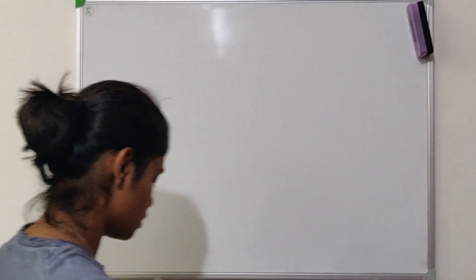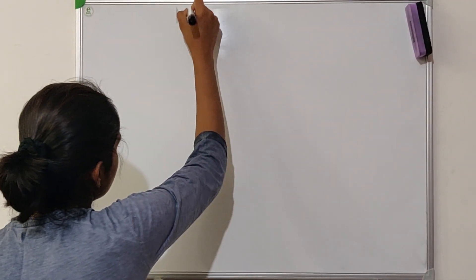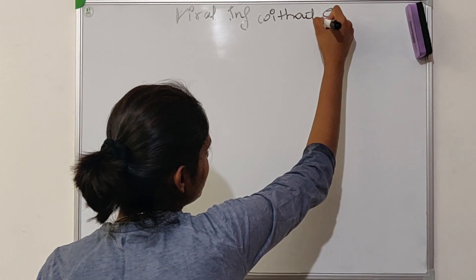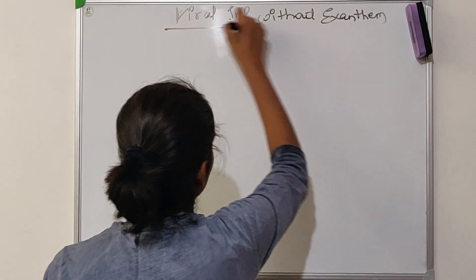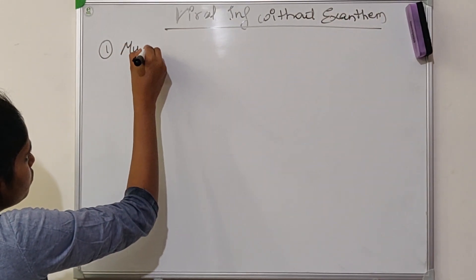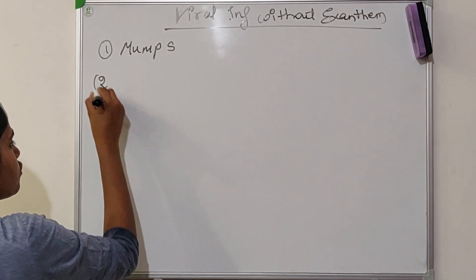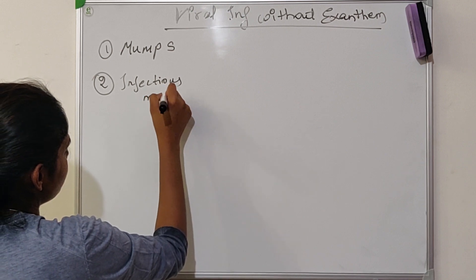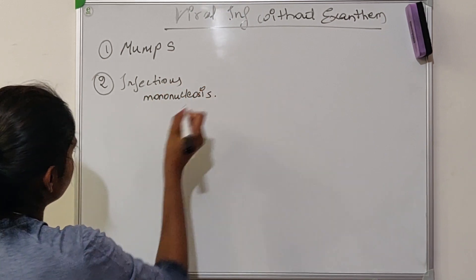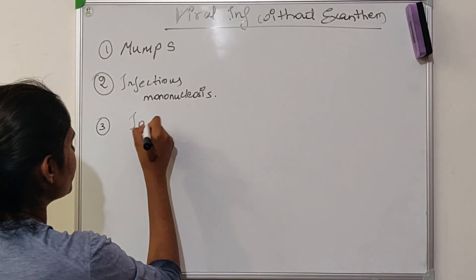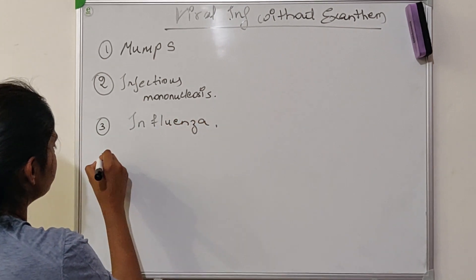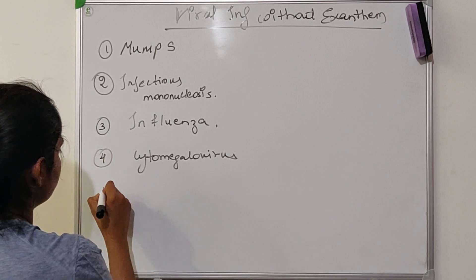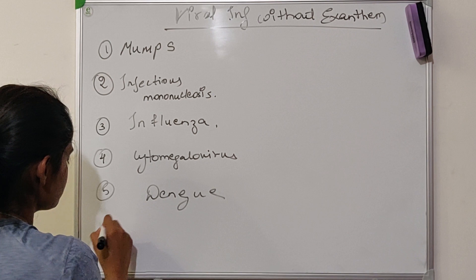In this lecture, let's have a look at viral infections without exanthem, that is, without rash. The topics we'll cover are: mumps, infectious mononucleosis, influenza, cytomegalovirus, dengue, and yellow fever.